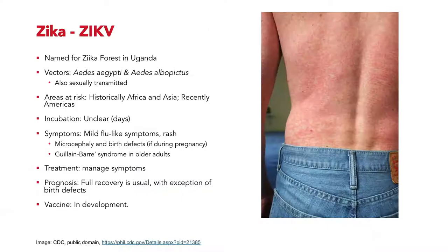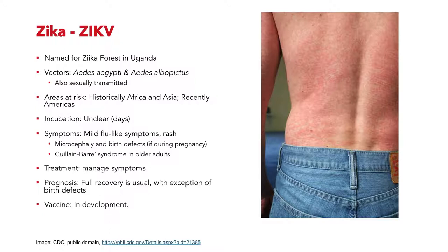Zika made its way into public consciousness a couple of years ago when there was an unexpected outbreak in South and Central America linked to severe birth defects. This virus is closely related to dengue and is named for the Zika forest in Uganda where it was first described. Like dengue, it followed its primary vector Aedes aegypti out of Africa. The symptoms are really mild — you might not even know you're sick — but if a woman is pregnant when she contracts this disease, the virus can cause severe birth defects including microcephaly, which is a lifelong debilitating condition. There is no specific antiviral and no vaccine.